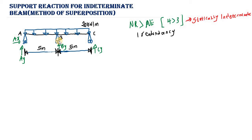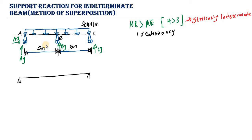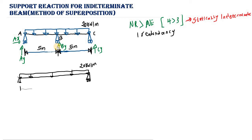After removing the redundant, we add up the loading structure and the redundant structure such that when combined they reproduce the original beam. The loading structure has a pin support at A, a roller support at C, and the distributed load of 20 kilonewtons per meter over 10 meters — with no roller at point B, since that is the redundant. This is what we call the loading structure.